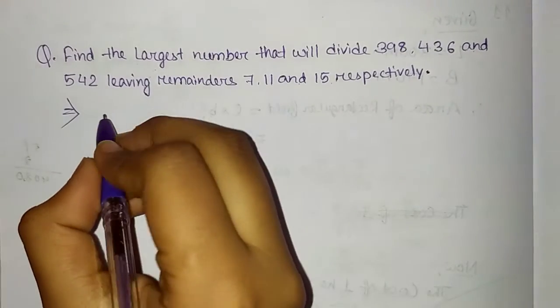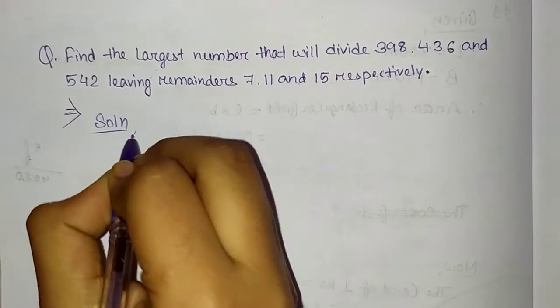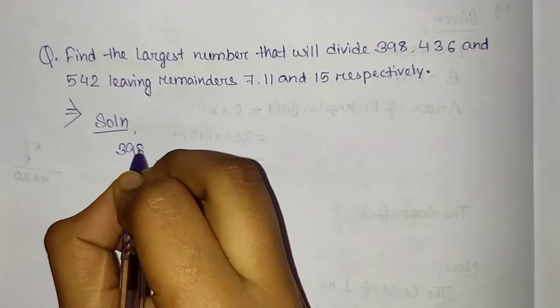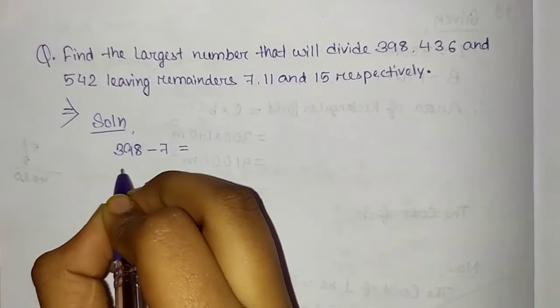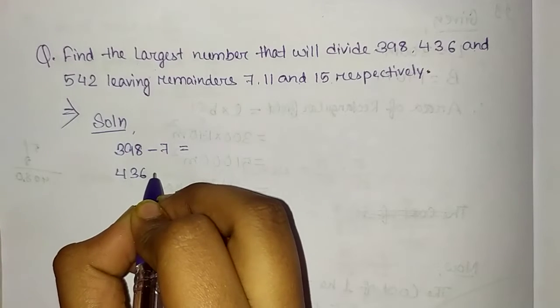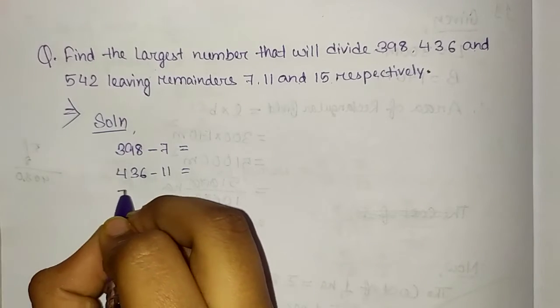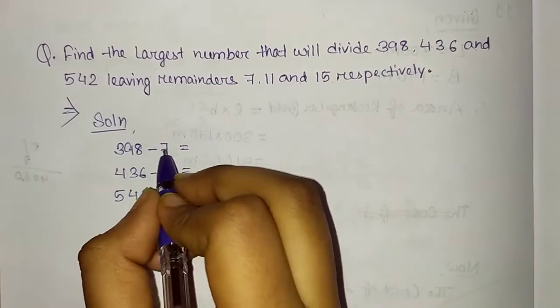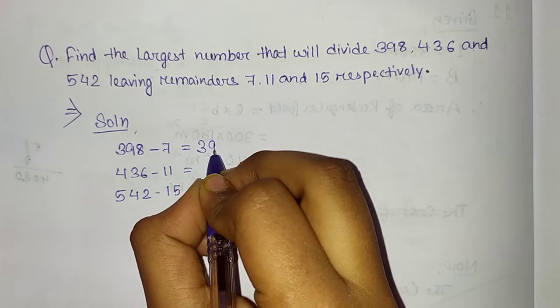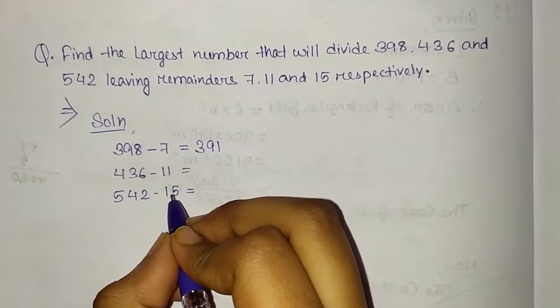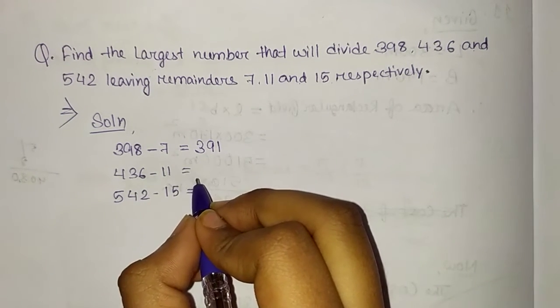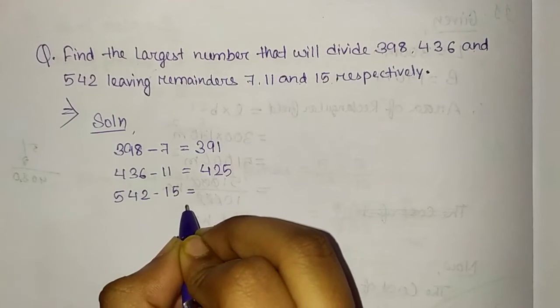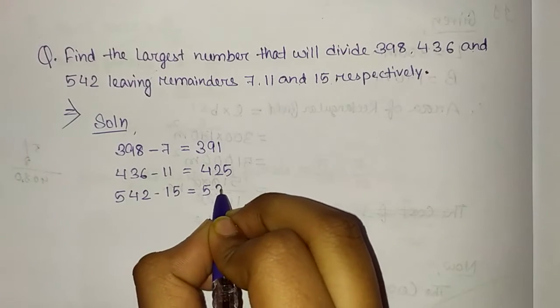So, first of all, we have to write solution. Next, with these 3 digits, we have to subtract this digit. 398 minus 7. Next, 436 minus 11. 542 minus 15. So, 398 minus 7 equals 391, 436 minus 11 equals 425, and 542 minus 15 equals 527.